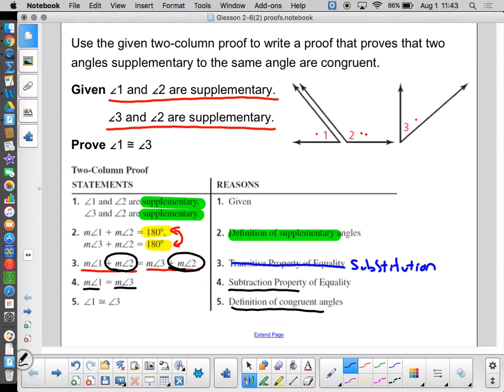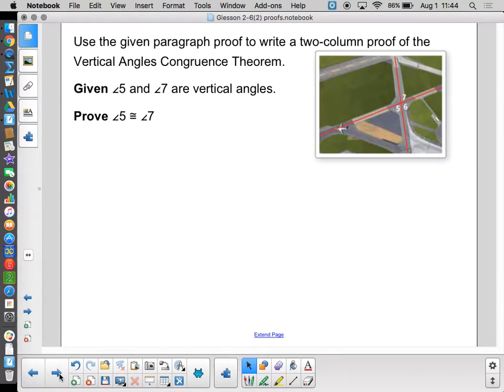Now, once again, this isn't the only way you could have done this. You certainly could have broken up step one into two steps, step two into two steps, wound up with up to seven steps here. That would have worked. But this is our proof. It's just walking through logically and deductive reasoning what's going on. Basically, this next one is you write a two-column proof of vertical angles congruent theorem.